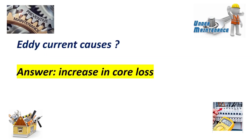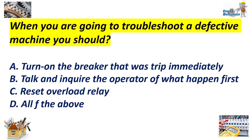Eddy current causes increase in core loss. When you are going to troubleshoot a defective machine, you should: A. Turn on the breaker that was tripped immediately. B. Talk and inquire with the operator about what happened first. C. Reset the overload relay. D. All of the above. Answer: B. Talk and inquire with the operator first.